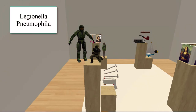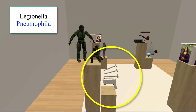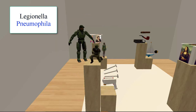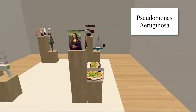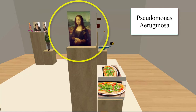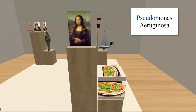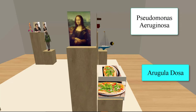The third bacterium is Legionella pneumophila. For the genus, we have a legionary soldier, and for the species we have a pneumatic nail gun filled with armor-piercing nails. The filling is a mnemonic hook for the 'phila' part of pneumophila. The fourth bacterium is Pseudomonas aeruginosa. To remember the genus, we have a fake picture of the Mona Lisa — the fact that it's fake helps with 'pseudo,' and the Mona Lisa covers the 'monas' part. For the species, we have an aruguladosa — a South Indian dosa made with arugula — to remind us of aeruginosa.